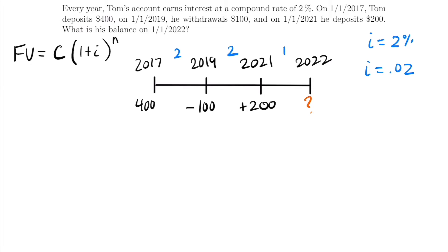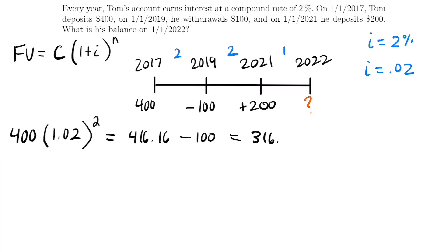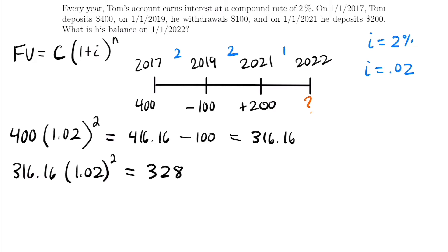For the first transaction: in 2017 we have a deposit of $400. We compound it for two years — all of 2017 and 2018 — so we calculate $400 × (1.02)², which equals $416.16. Then we apply the withdrawal: we subtract $100 from this amount, leaving $316.16. Now we're ready to compound again. We take $316.16 and multiply it by 1.02 for another two years, which gives us $328.93.